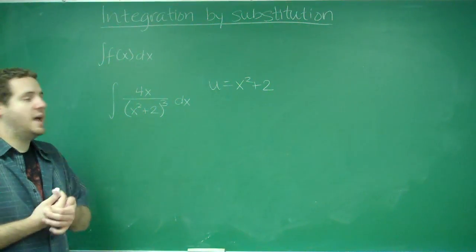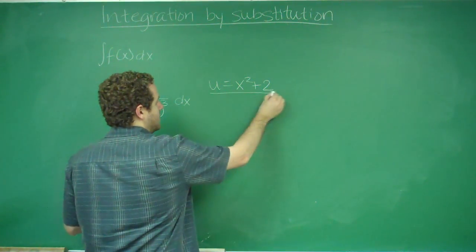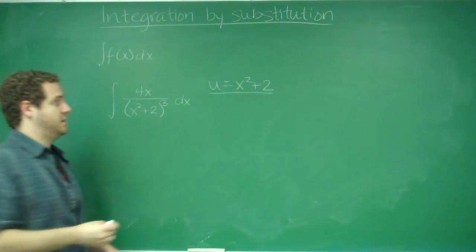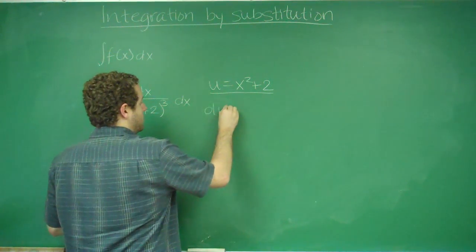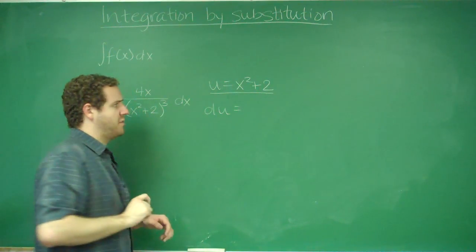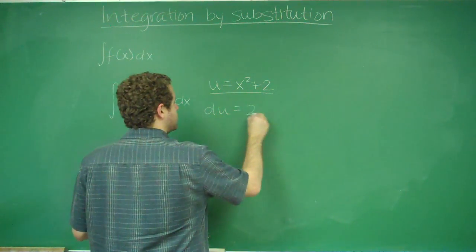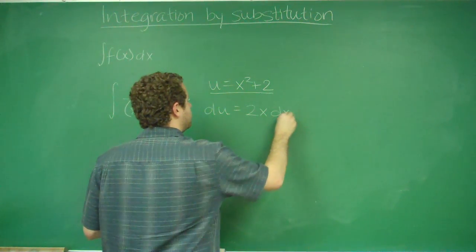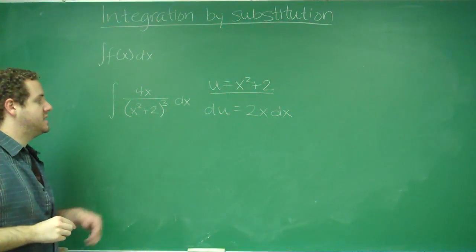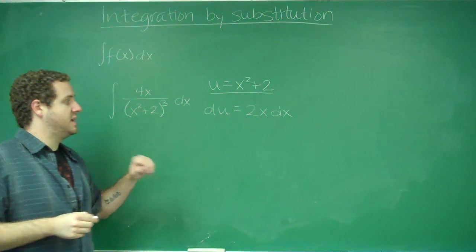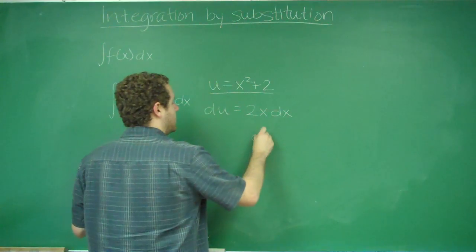The only way you can do that is take your equation that you determined u by and do the derivative of it. du, the derivative of x squared plus 2 would be 2x dx. Now you can see I do have a dx, and we want to get rid of the dx, so we want to solve for dx here.